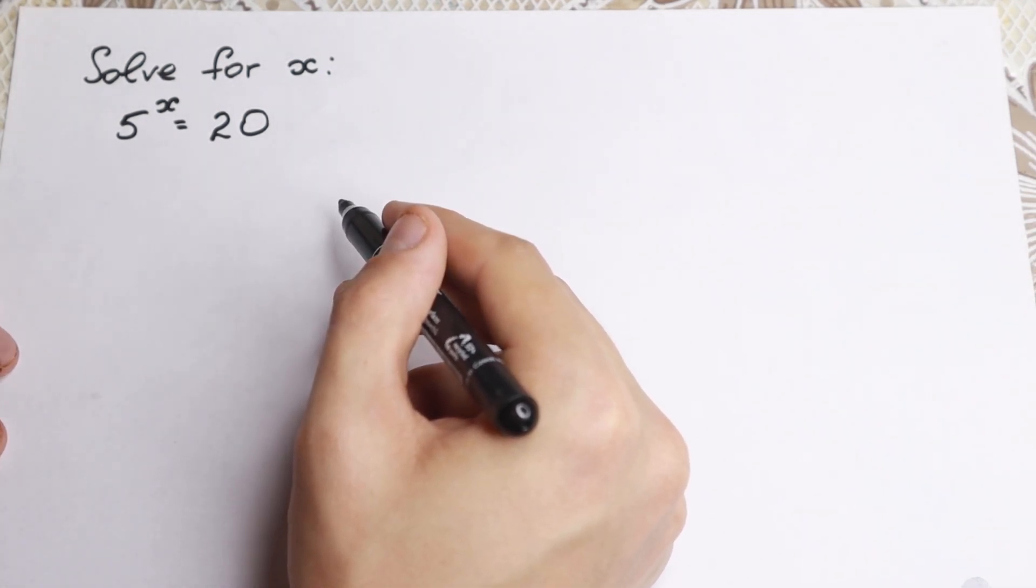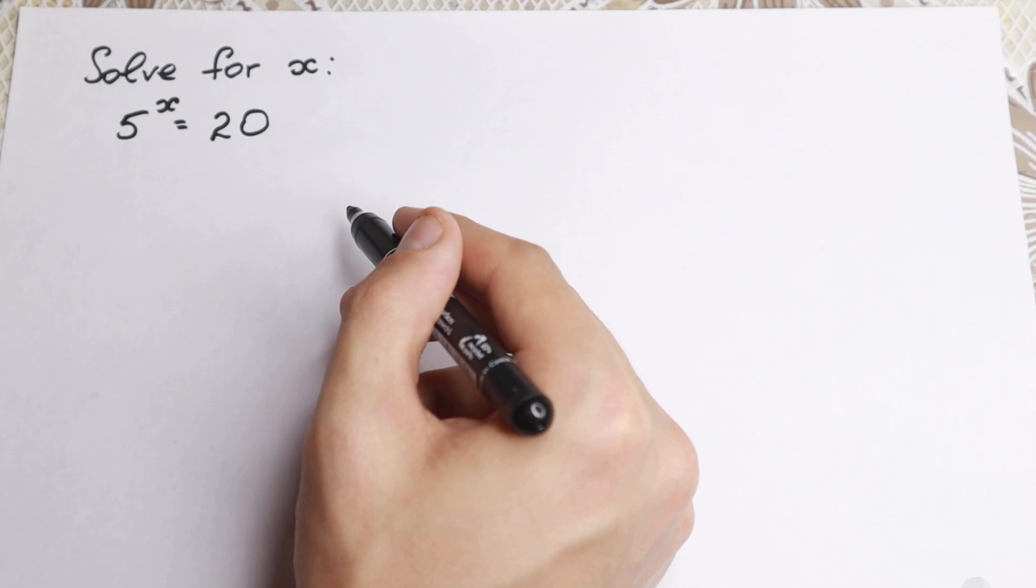On the first sight, a lot of students do this mistake. They say that x equal to 4, this is our answer because 5 times 4 equal to 20. But this is the wrong way to solve it. Forget this way because we have an exponential equation.